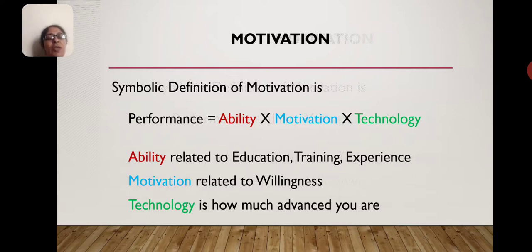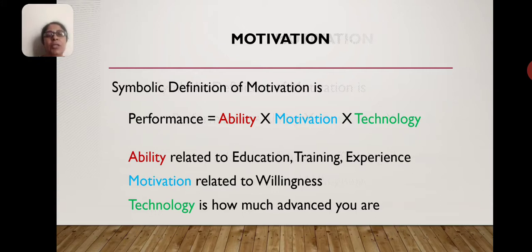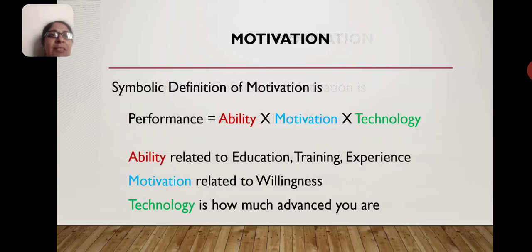Ability is a function of education, training, and experience — a person's capability depends on how much they have studied, how much training they have taken, and how much experience they have. Motivation is related to willingness — the desire to work. If we are working with full willingness, our performance will be very good. Technology refers to how advanced you are — if you have the latest machines but are not using them, performance will be slightly lower compared to those using latest technology.